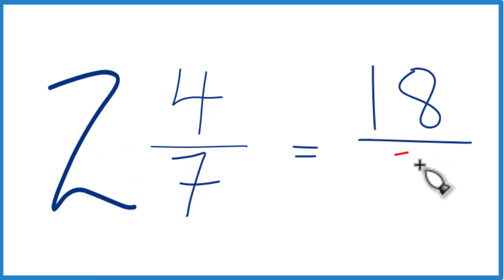Then we bring the denominator across, that's our improper fraction. 18 sevenths is equivalent to 2 and 4 sevenths, so it's the improper fraction for our mixed number.